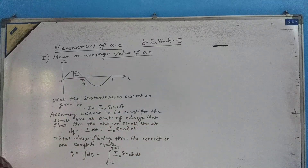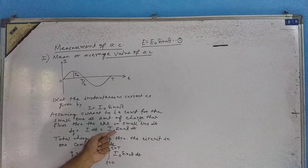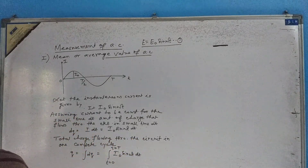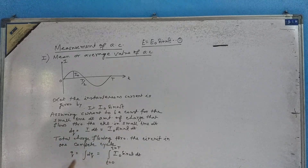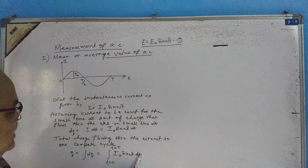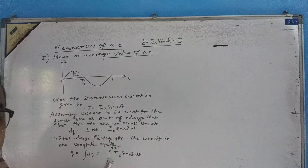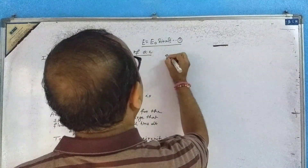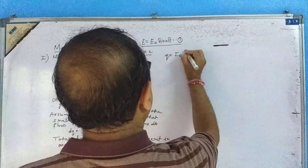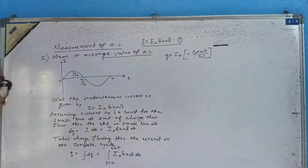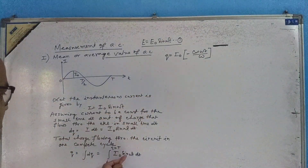From the definition of current, dq is equal to i into dt, so dq equals I naught sin omega t dt. Then what is the total charge flowing through the circuit in one complete cycle? The total charge Q equals integration of dq, which is I naught sin omega t dt. I naught comes out, and the integration of sin omega t gives minus cos omega t over omega. The limits of integration go from t equal to zero to t equal to capital T.